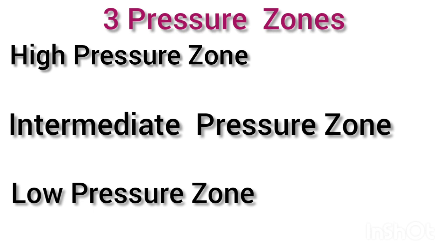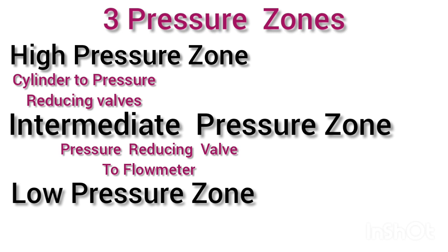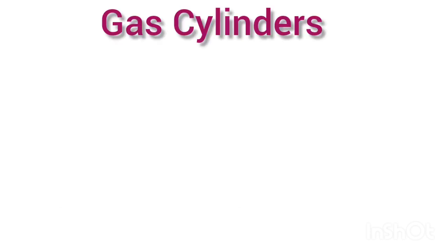The high pressure zone starts from the gas cylinders to the pressure reducing valves. The intermediate pressure zone starts from the pressure reducing valve till the flow meter. From the flow meter to the common gas outlet is the low pressure zone. Now, the gas cylinders.